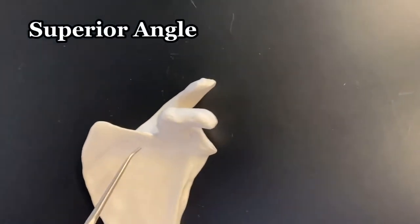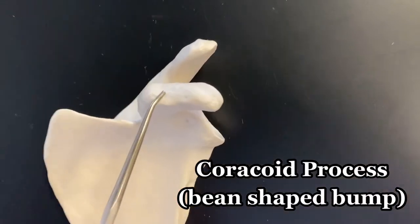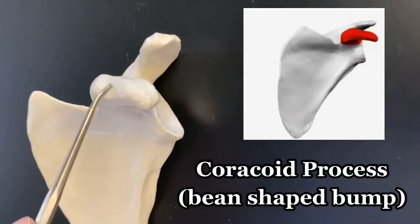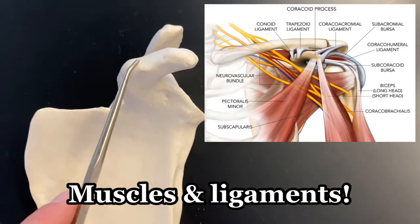Now don't be confused. There's another bean shaped bump right here. This is your coracoid process. Coracoid process. Nice attachment for a lot of muscles in the body.